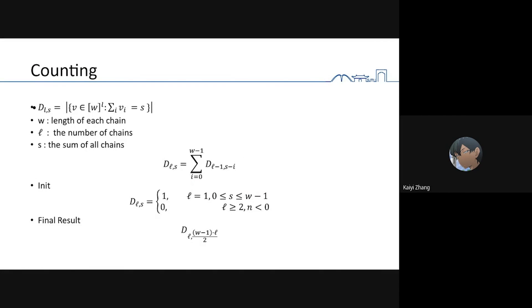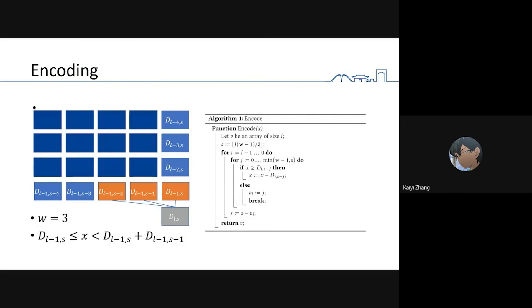We first figure out how to count them. We can exactly count how many constant sum codewords we have. And we have an efficient polynomial time encoding algorithm to encode the message from binary string to constant sum codeword.